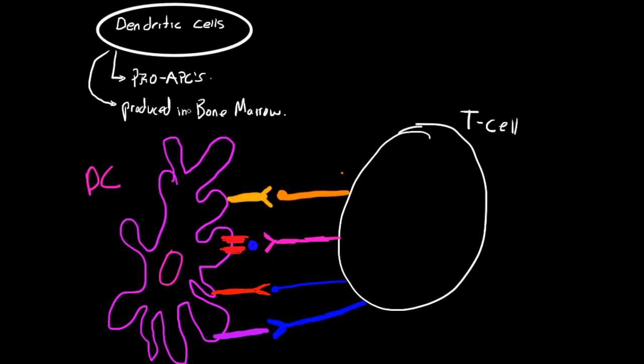The immature dendritic cell precursors are produced in the bone marrow. So once again, you'd have something like a hematopoietic stem cell that'll come into some sort of common myeloid progenitor cell.